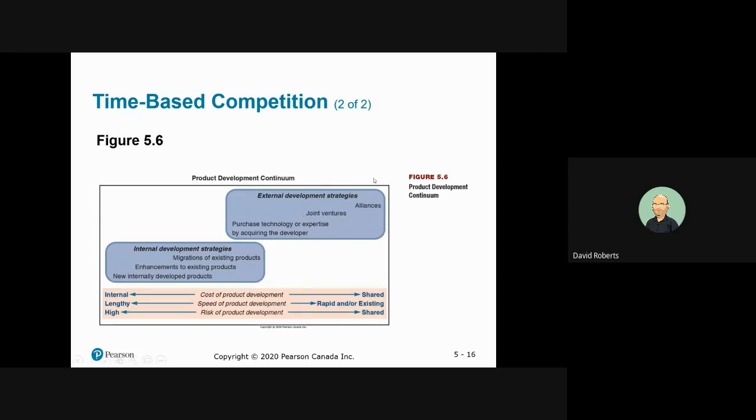Here's just a diagram that you can see that puts some of the previous concepts together in a graphic form. So fairly straightforward, I would think. Internal development, external development, and how you develop the product with joint ventures, alliances, or just do it internally.